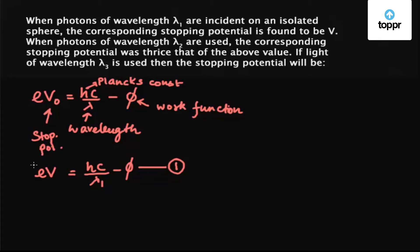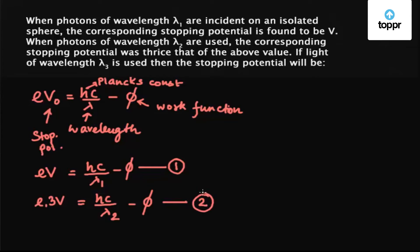In the second case, when wavelength lambda 2 is used, the stopping potential becomes thrice of the original value, that is, it becomes 3V. So we have e × 3V = hC/λ2 - φ. Let's name this equation number 2.